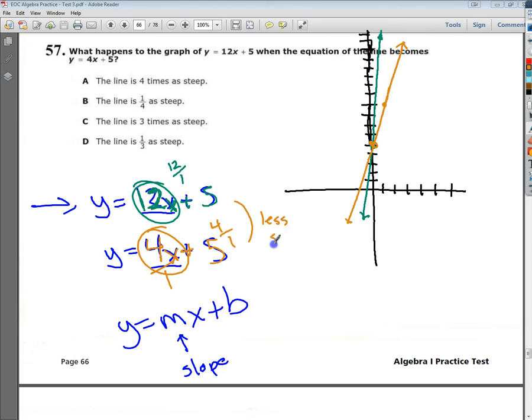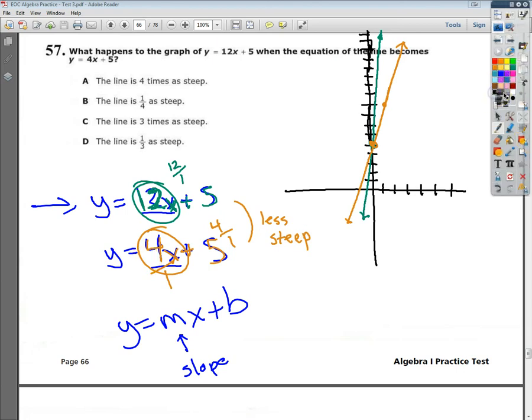So in the first choice, A, the line is 4 times as steep. That is not true even a little bit. It doesn't get steeper. It gets less steep as I transition from 12x to 4x. That's an important component here, the perspective thing again.